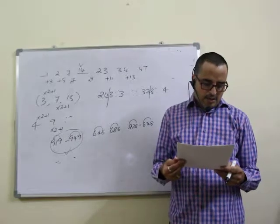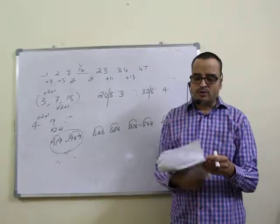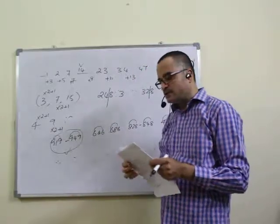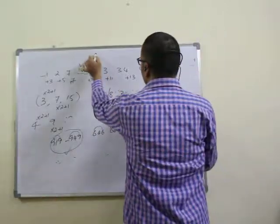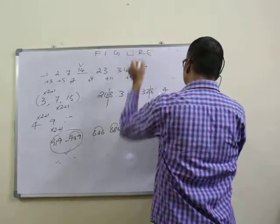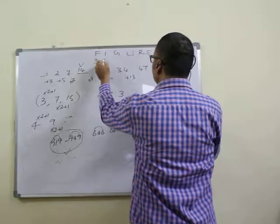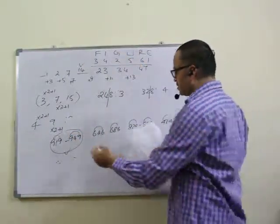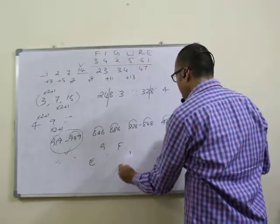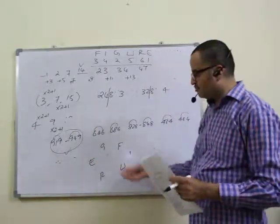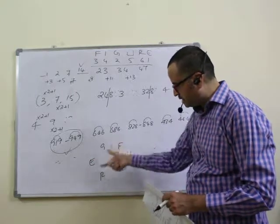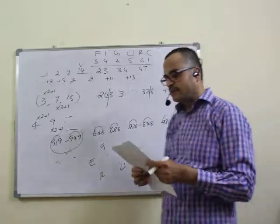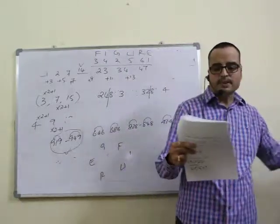Question nine: given the letters E G F I U R, which word can be formed? Rearranging — F I G U R E — that's the word 'figure.' The arrangement is 3 4 2 5 6 1. So ninth question answer is fourth option.